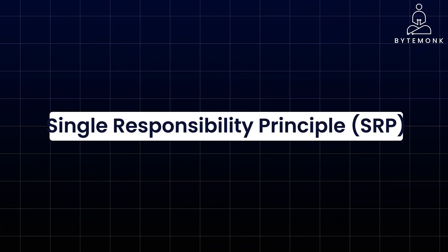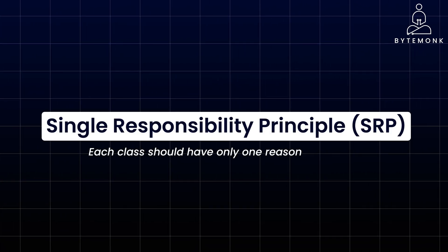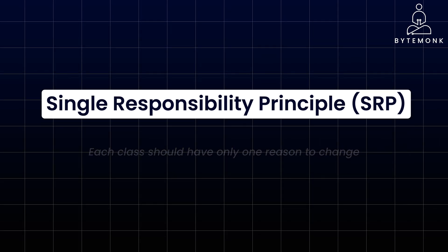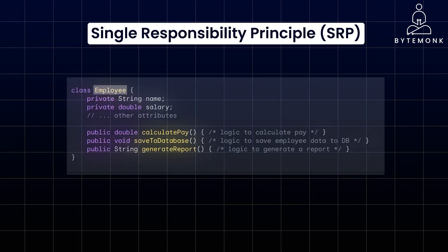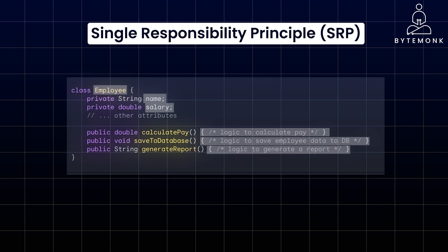Single Responsibility Principle, or SRP. The idea is a class should have only one reason to change. In other words, each class should be responsible for a single part of the software's functionality. In this original employee class, there are multiple responsibilities: it stores employee information such as name and salary, it contains the logic to determine the employee's paycheck, it handles saving employee data to the database, and it also generates a report based on employee data. The issue is that this class has too many reasons to change.